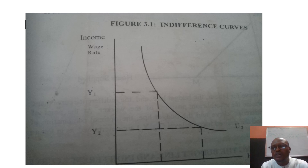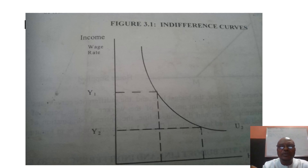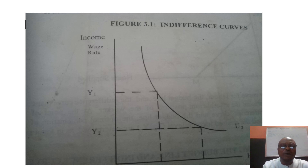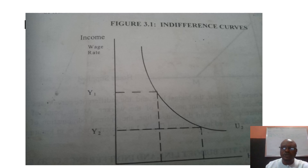At indifference curve U2, that is the satisfaction derived by supplying more hours of work in order to earn wages. At U1, that is the satisfaction derived by reducing hours of work, forgoing some wages, and enjoying more leisure hours.